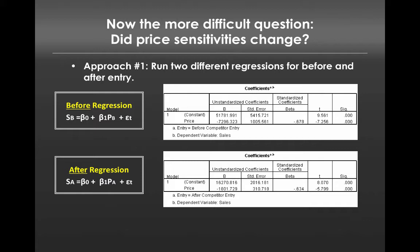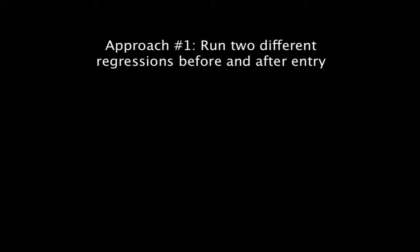But what we were unable to do is test if these two different values, negative $7,200 and negative $1,800, were actually statistically different from one another. And for that, we need our second approach, interaction.